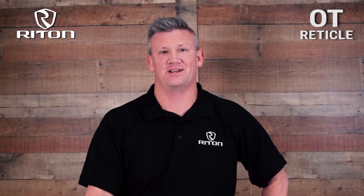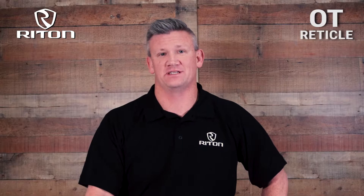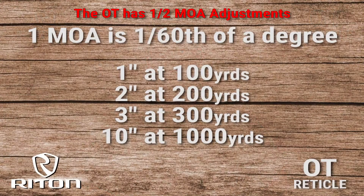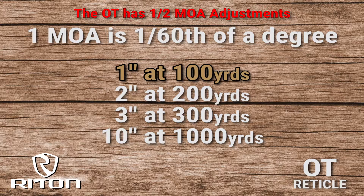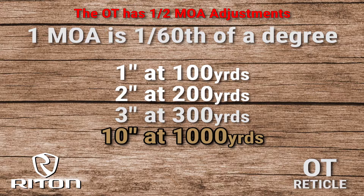Hey guys, it's Jeremiah at Ride On Optics. Today we're talking about the OT reticle. This one comes in the second focal plane with MOA adjustments. MOA, or minute of angle, is a linear measurement. One MOA at 100 yards equals one inch, one MOA at 200 yards equals two inches, and at 1000 yards one MOA equals ten inches.